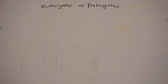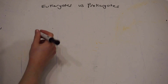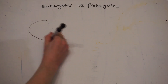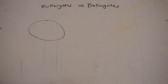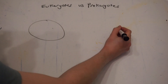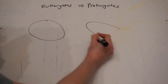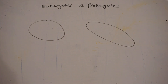Organisms can either be prokaryotes or eukaryotes. All living things are made of cells and these cells can either be prokaryotic or eukaryotic cells. Eukaryotic cells are the more complicated cells which include a lot more cell structures within them, and these include all animal and plant cells. Meanwhile prokaryotic cells are much simpler and also smaller, like bacteria.